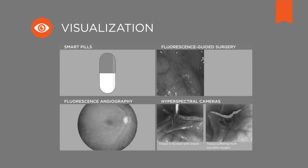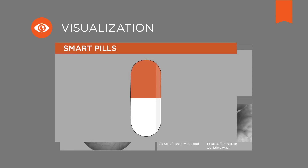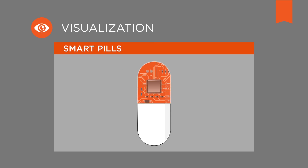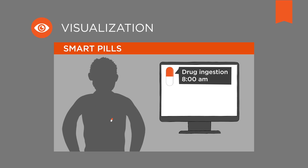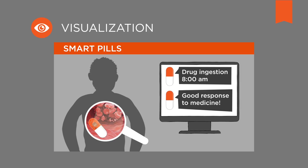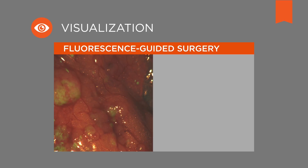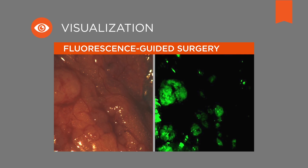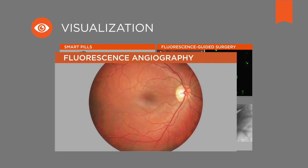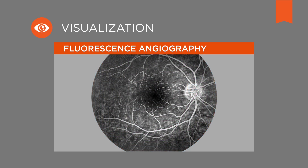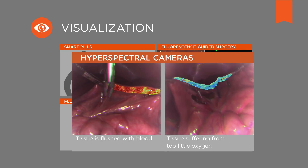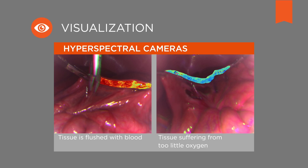Number four: visualization. Cameras also serve as the eye in many sophisticated imaging techniques. Used as endoscopes, or so-called smart pills, millimeter-sized cameras record the device's path through the inner parts of our body. Fluorescence guided surgery lets the surgeon distinguish between healthy and cancerous tissue in real time during the procedure. Fluorescence angiography lets the ophthalmologist see if the tiny vessels in the background of the eye are properly connected. Hyperspectral cameras can distinguish between tissue that is flushed with blood and tissue suffering from too little oxygen.